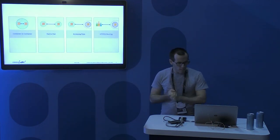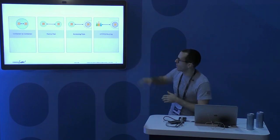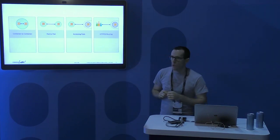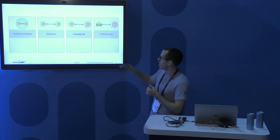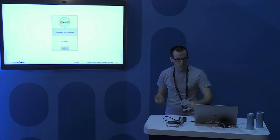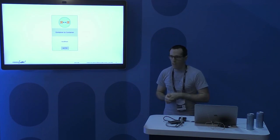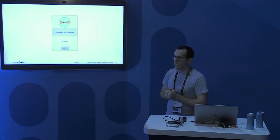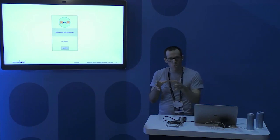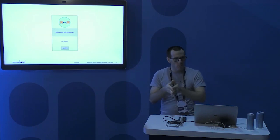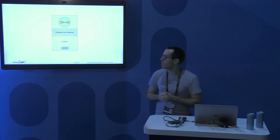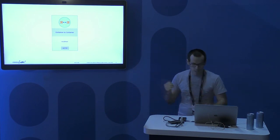There are four things we're going to cover: container to container, pod to pod, how we keep track of and access pods externally, and how we do additional routing — reverse proxy and HTTPS routing. First: multiple containers within a pod all share the same network namespace and communicate on the localhost interface.